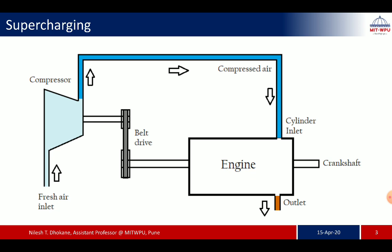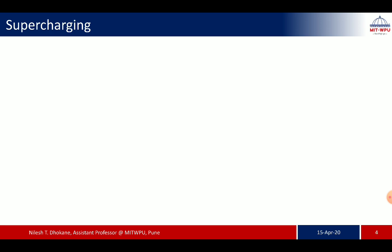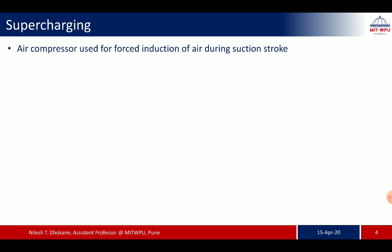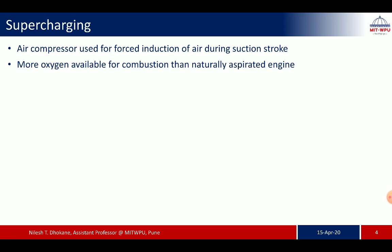The input energy for this compressor is provided by the crankshaft using a belt drive, gear, or chain drive — so the compressor runs by taking energy from the engine itself. Supercharging is essentially an air compressor used for forced induction of air during the suction stroke of the IC engine. Due to this, more air enters the cylinder, providing more oxygen for combustion than in a naturally aspirated engine, enabling more effective fuel burning and greater output per cycle.